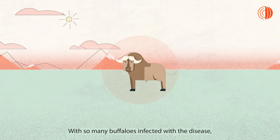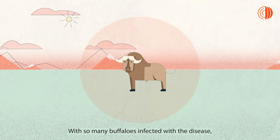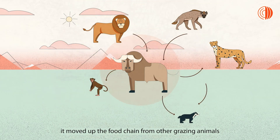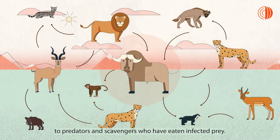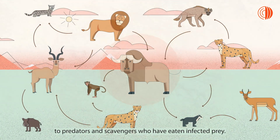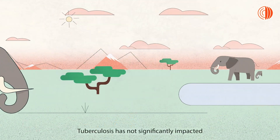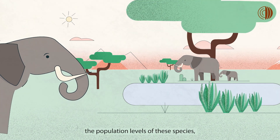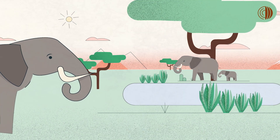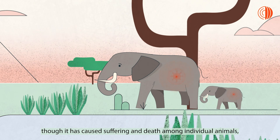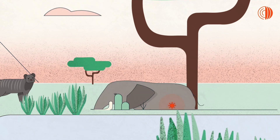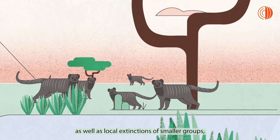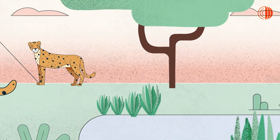With so many buffalos infected with the disease, it moved up the food chain from other grazing animals to predators and scavengers who had eaten infected prey. Tuberculosis has not significantly impacted the population levels of these species, though it has caused suffering and death among individual animals, as well as local extinctions of smaller groups, such as banded mongooses.